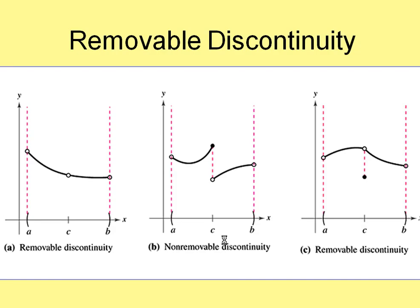We apply the word removable to a discontinuity if it is discontinuous because of just one point being removed. Here's an example of a removable discontinuity: removing just one point makes the function discontinuous. This next one is non-removable because there's a large gap — filling in one point won't make it continuous. The third example is removable: filling in that one point makes it continuous again, so we call that a removable discontinuity.